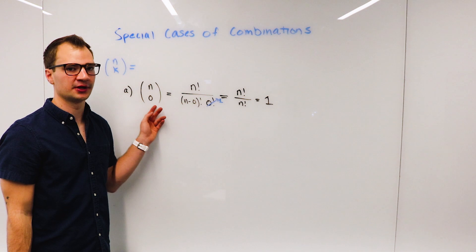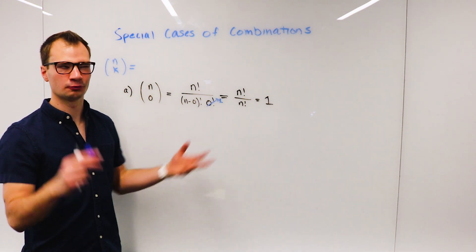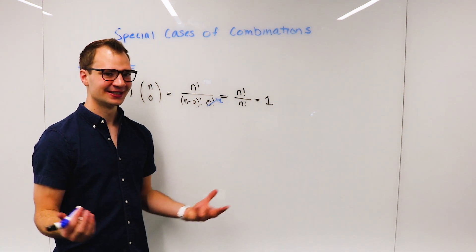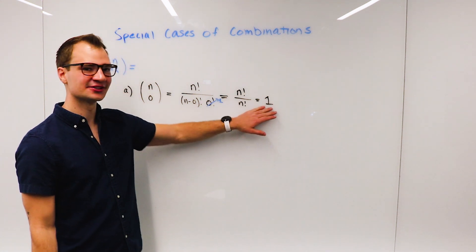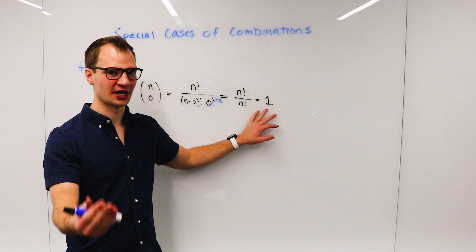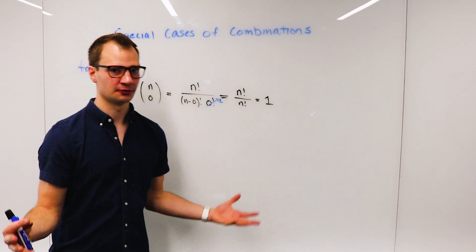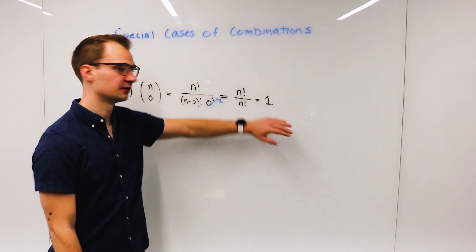So if we're picking zero people to be on a committee out of 10 candidates, there's only one way in which that could happen. I mean, it seems like the answer should be zero, but there's one way in which it can occur, and that's nobody gets on.